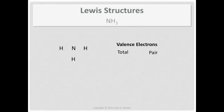Now we do the valence count. Look at the columns. Nitrogen is in column 5A. Hydrogen is in column 1A. There's eight total valence electrons. Divide by two. There's four pair.